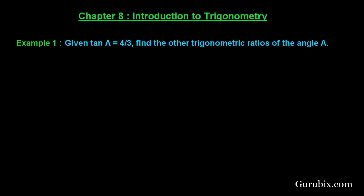So let us see how to solve this example. First of all, let us draw a right triangle. Suppose this is our right-angled triangle ABC, which is right-angled at B.